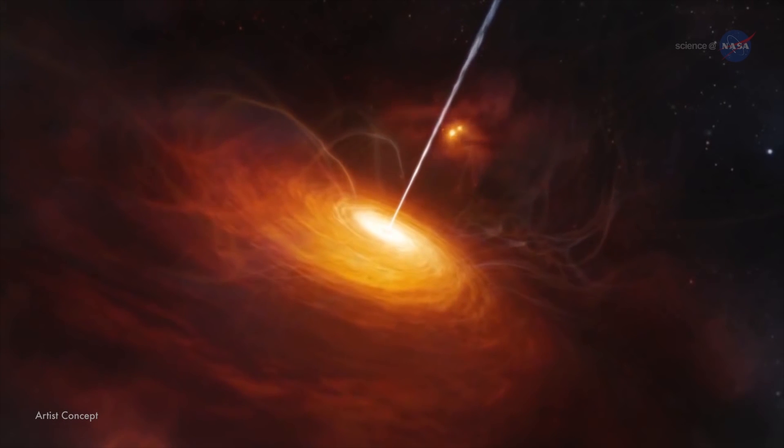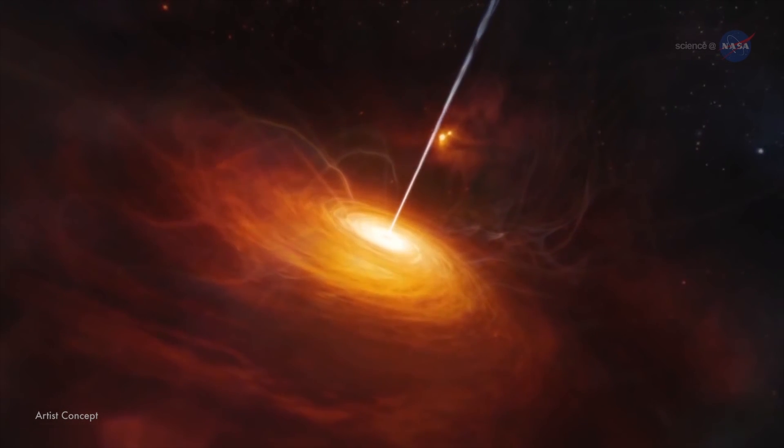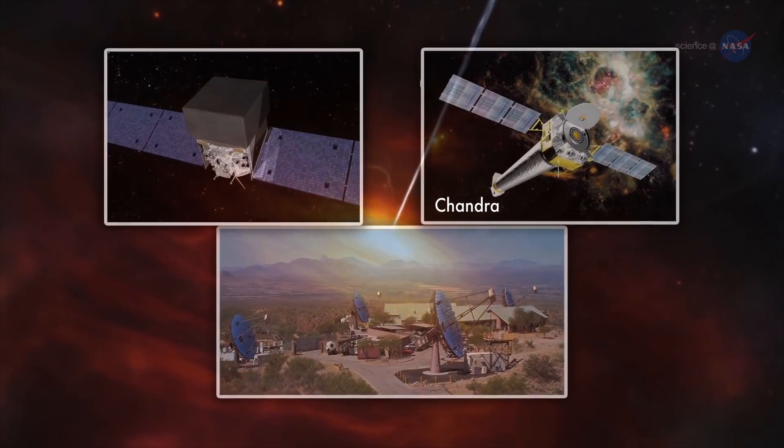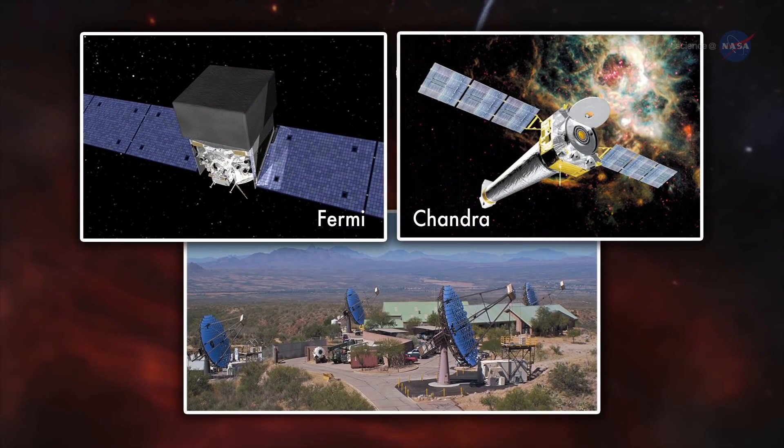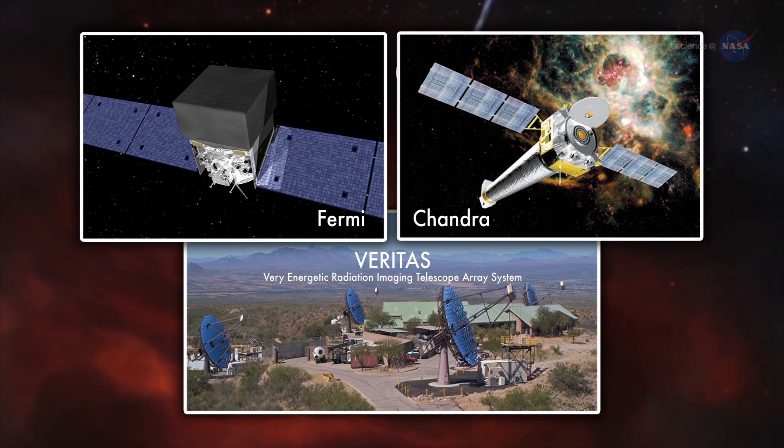Perlman and his colleagues recently attempted to do so by using X-ray and gamma-ray observations of distant quasars by the Chandra X-ray Observatory, Fermi Gamma-ray Space Telescope, and the Very Energetic Radiation Imaging Telescope Array System, or VERITAS.